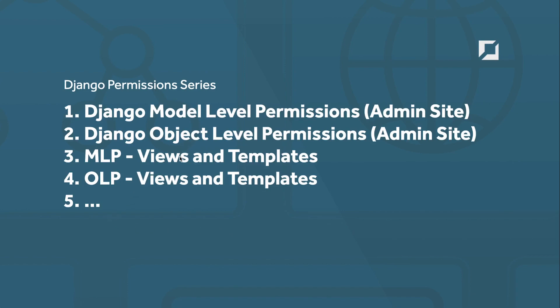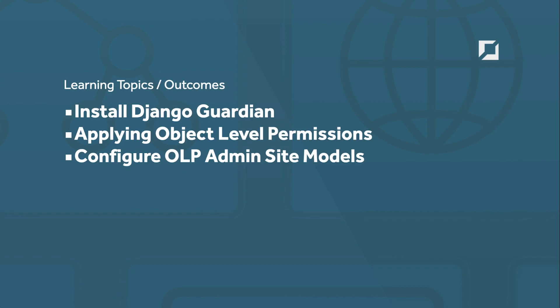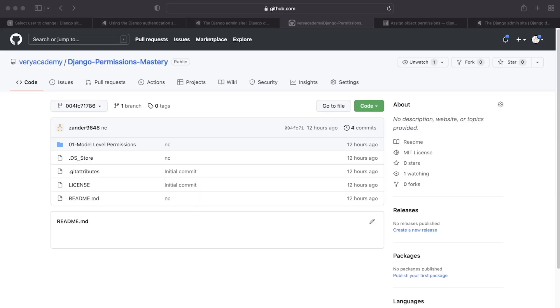After this we'll have a look at views and templates utilizing model level and object level permissions. Just a final check to make sure this tutorial is exactly what you're looking for — we're going to install Django Guardian, go through a very simple setup process, and look at how we can instantly interact with Guardian to apply object level permissions. At that point we're ready to think about configuring the admin site to actually apply those permissions once a user logs in.